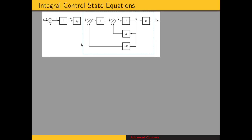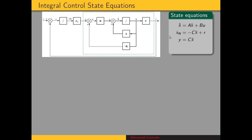Here's the block diagram for our system with integral control, and the state equations for this system. We have x dot equals Ax plus B times u. The differential equation for x sub n is: xn dot equals e, which is negative y plus r. Since y equals C times x, xn dot equals negative C times x plus r.